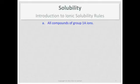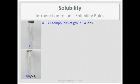The way this rule list is used, it's top-down priority. For instance, all compounds of Group 1A ions — so here's Potassium Chloride and Sodium Sulfate. If it's Potassium something, Sodium something, or Lithium something, your expectation is that it will be soluble, and you don't care about the anion. There are exceptions to these rules, but at this level we're not going to cover any exceptions to this rule.